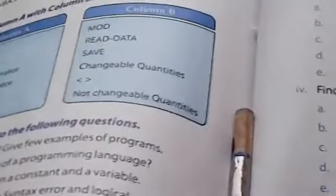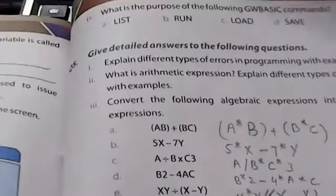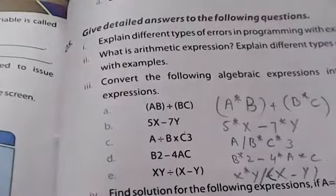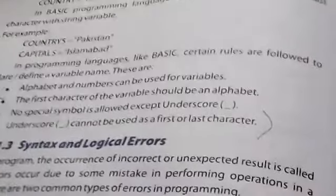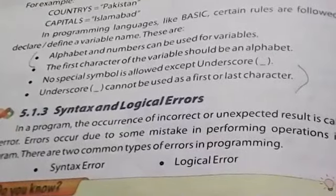Now let's go to the exercise. The exercise requires you to write the purpose and syntax of: List, Run, Load, and Save. Next, you have a detailed answer question: Explain different types of errors in programming with examples. There are two types of errors: syntax error and logical error. Refer to page number 108, and write your definition with examples for both.